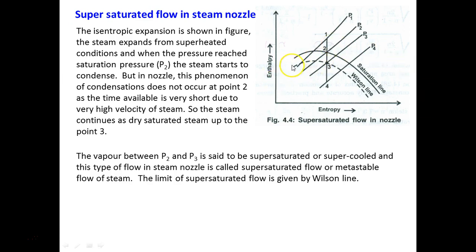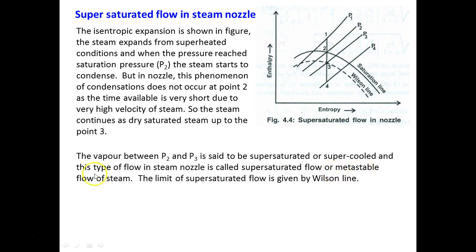The limit of super-saturated flow is given by the Wilson Line — named after the scientist who first investigated this phenomenon. The isentropic expansion shows steam expanding from superheated condition; when pressure reaches the saturation pressure, steam should condense. But in a nozzle, condensation does not occur at point 2 because the time available is very short due to the very high velocity. The steam continues as dry saturated steam up to point 3. The vapor between pressures P₂ and P₃ is called super-saturated or sub-cooled vapor, and this type of flow is called super-saturated or metastable flow.